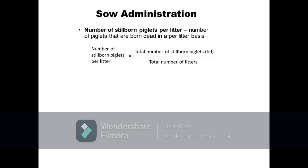Next is number of stillborn piglets per litter, which refers to the average number of piglets born dead on a per litter basis. It is calculated as the total number of stillborn piglets divided by the total number of litters from which these dead piglets were born. For example, if there were 3 dead piglets born from 12 litters, the average number of stillborn piglets per litter is equal to 3 divided by 12, equals 0.25 head.